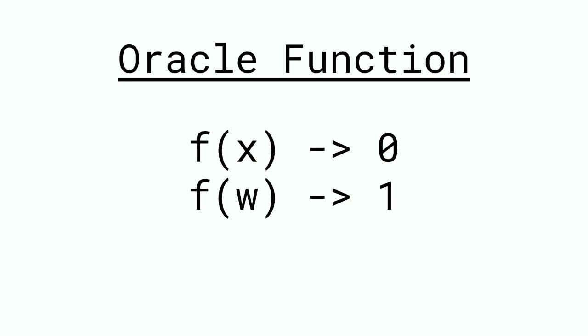What this oracle function does for an unstructured search is very simple. It outputs 0 if the input is x, anything we're not looking for. It outputs 1 if the input is w, the value we are looking for.